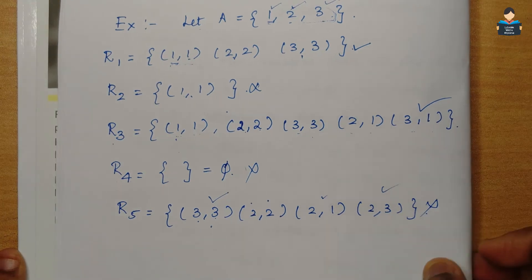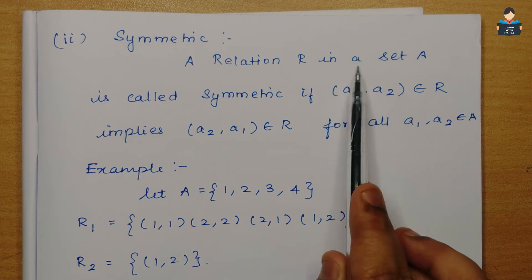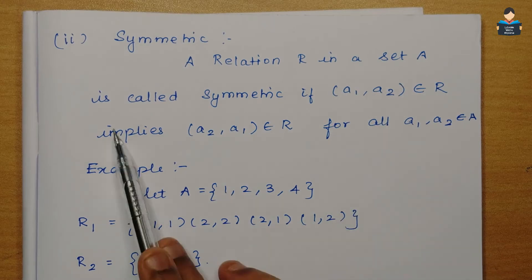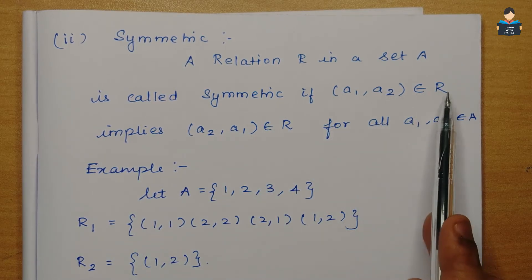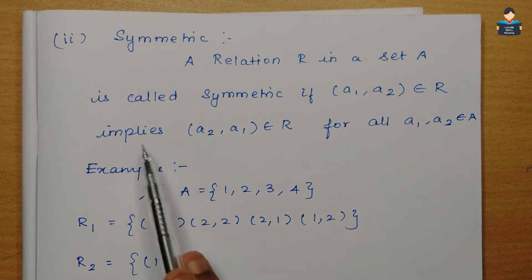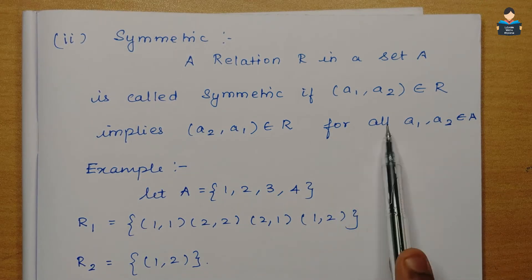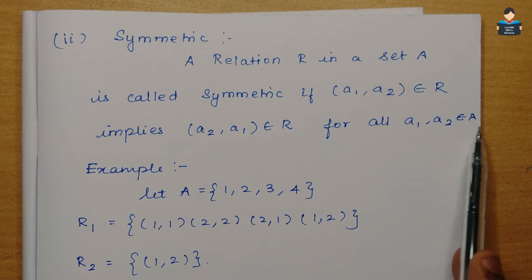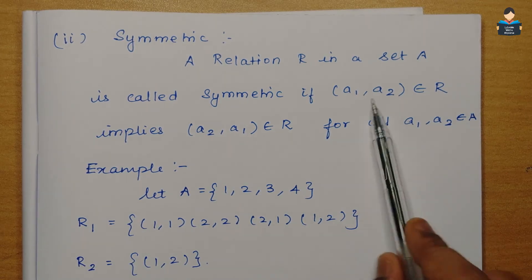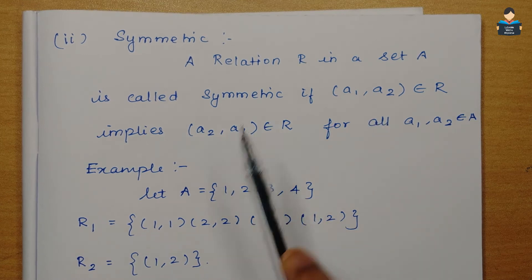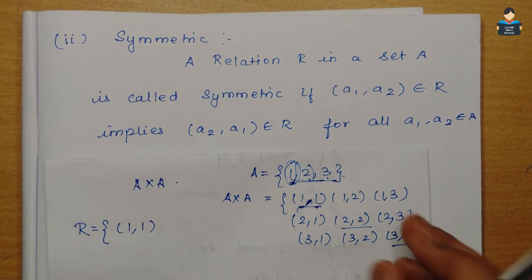Next is the symmetric condition. A relation R in a set A is called symmetric if (a1,a2) belongs to R implies (a2,a1) belongs to R, for all a1, a2 belonging to A. So in the Cartesian product, when an ordered pair is present, its reverse must also be present.